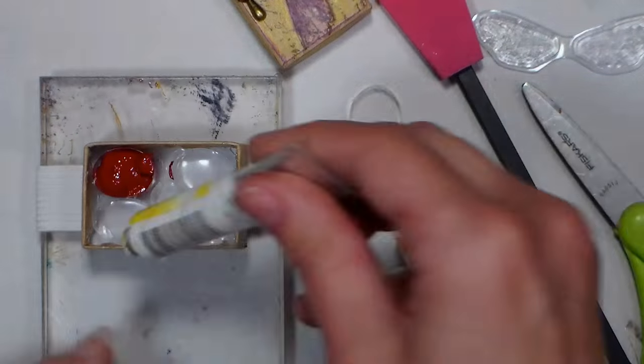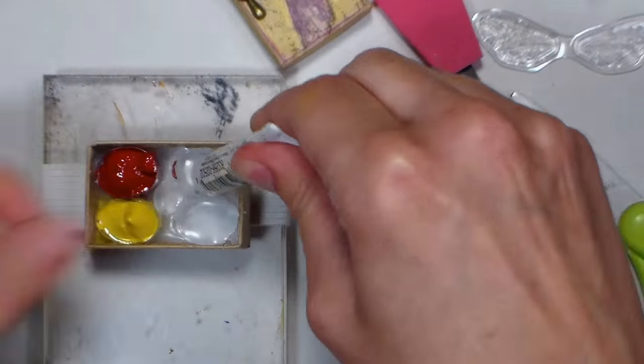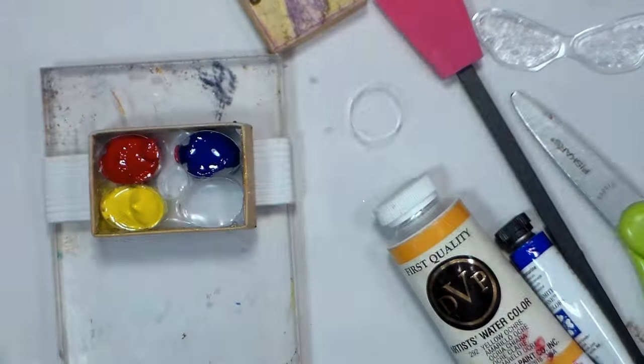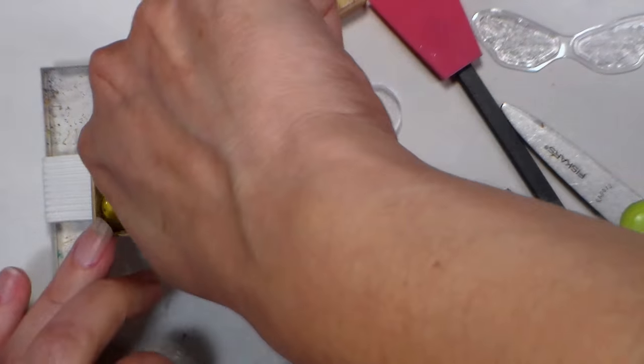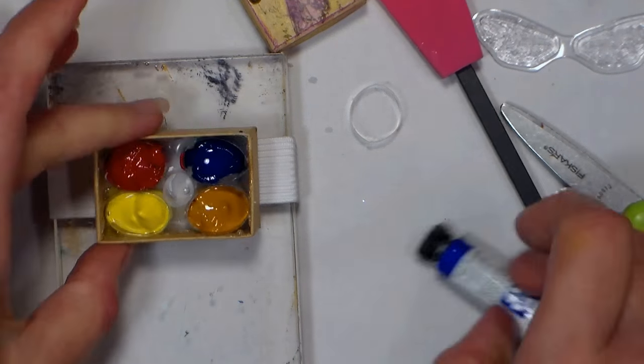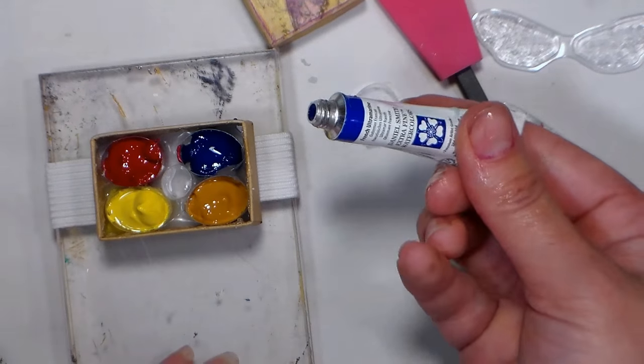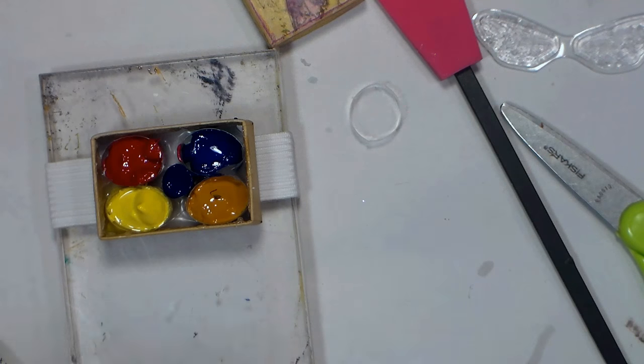Now the fun part: we get to fill this with paint. I decided to use a fairly neutral red, a warm yellow ochre, a cool lemon yellow, a turquoise blue, and an ultramarine blue. That would give me a lot of options when I'm mixing my colors on the go.